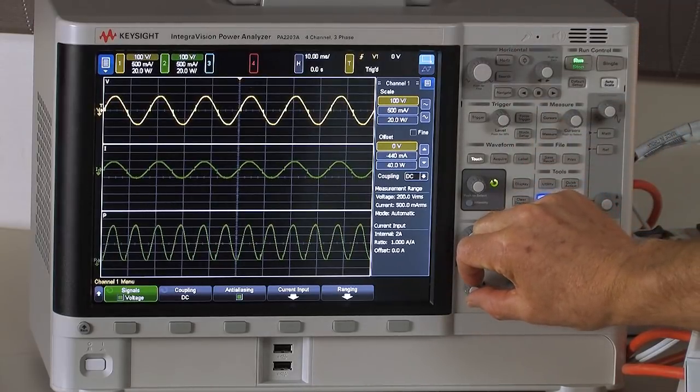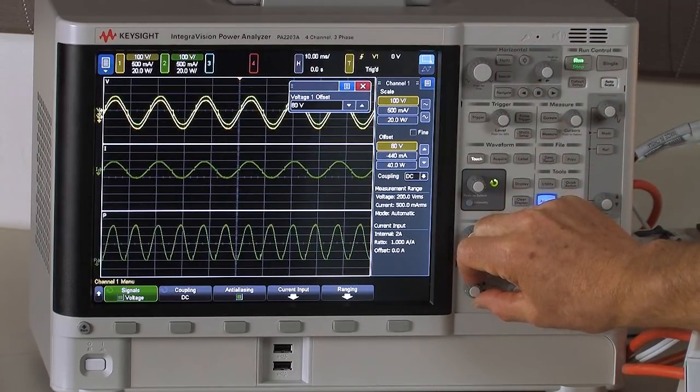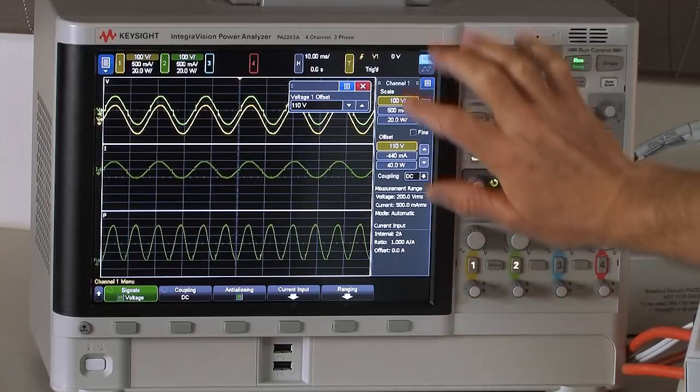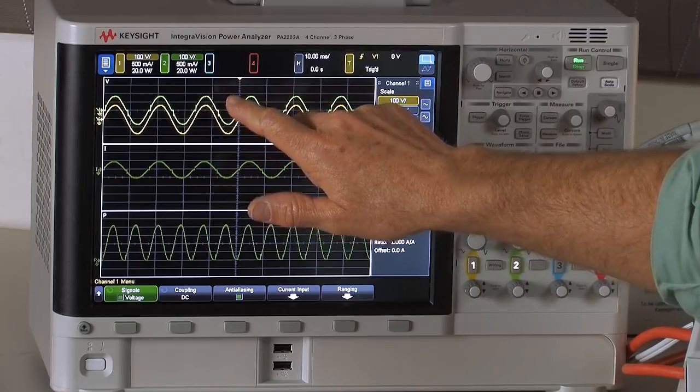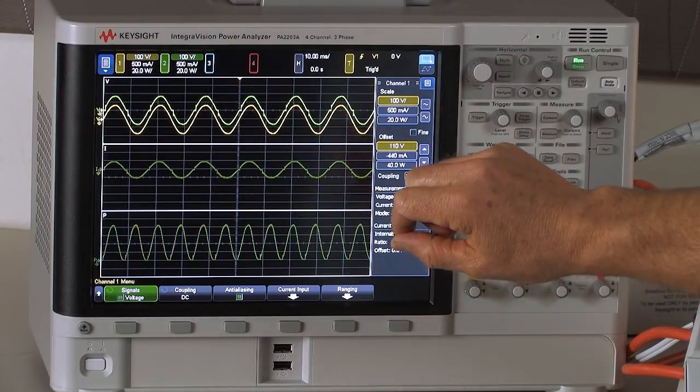I'm going to go ahead and just move our waveform down so you can actually see the two waveforms together. The yellow set of waveforms represents our input and the green represents the output of the dimmer switch.